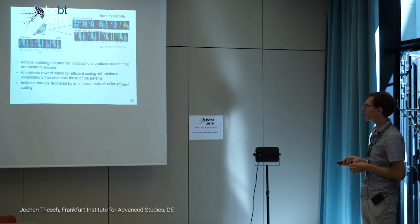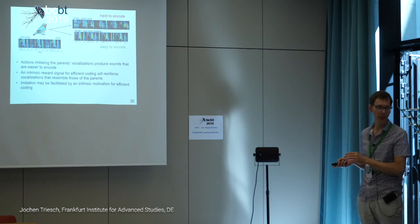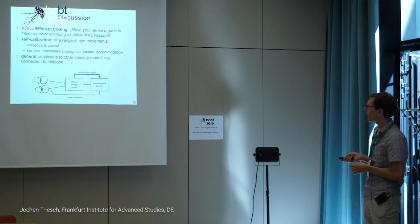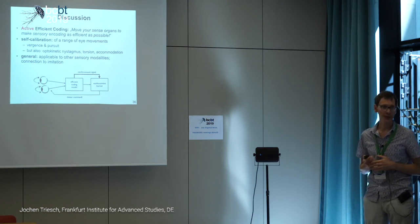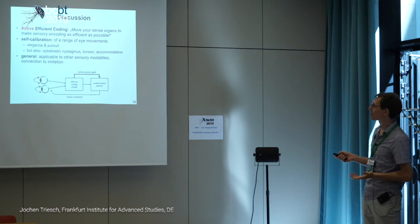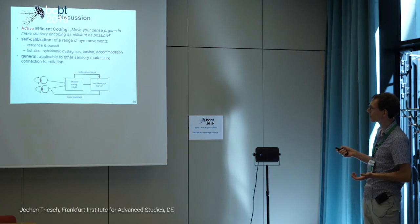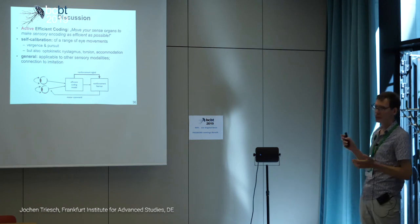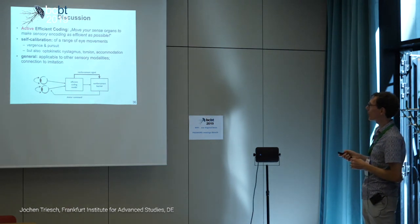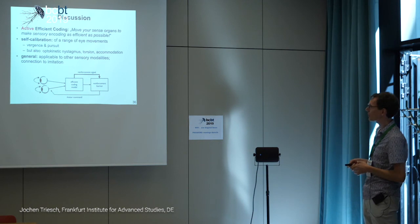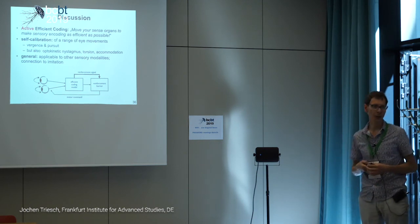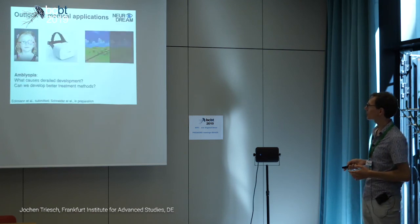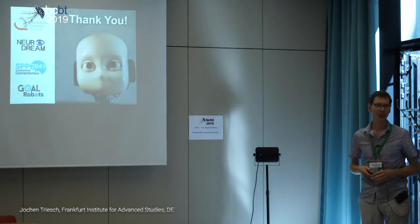We've done some modeling in this direction to get the basic idea across. To summarize: active efficient coding means moving your sense organs to make sensory encoding as efficient as possible. You can use this to self-calibrate a range of eye movements — vergence, pursuit, optokinetic nystagmus, torsion, and accommodation movements. We've also done work on bat echolocation with the same approach, showing it generalizes to other modalities. And I've highlighted a possible connection to imitation learning even.